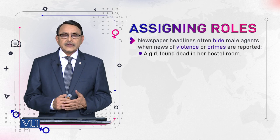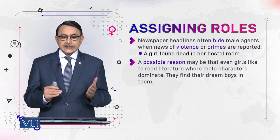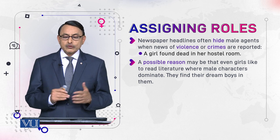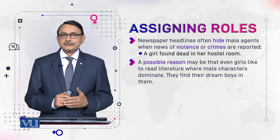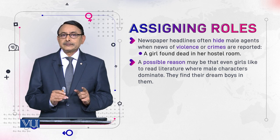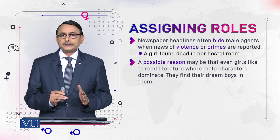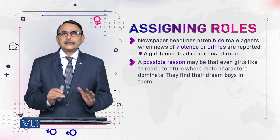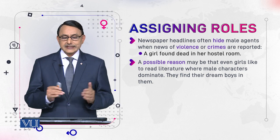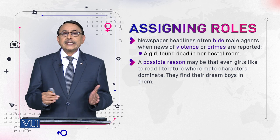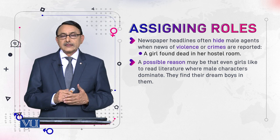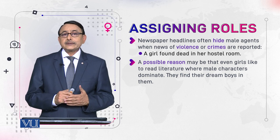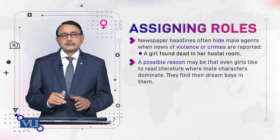In newspaper headlines, it often happens that male agents are hidden when news of violence or crimes is reported. If the agent — the criminal, the doer of the crime — is a male, their identity is hidden. For example, a headline like 'A girl found dead in her hostel bedroom' does not mention who killed that girl.